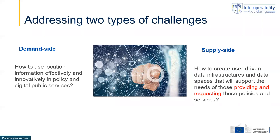Summarizing this, we see that there are in fact two main types of challenges. On one hand, there are challenges with regard to the demand side — how can we make sure that location information is and can be effectively and innovatively used in public policies and digital public services. But there's also the supply side, because even though existing infrastructures and data spaces are already making a lot of data available, it's about how we can make sure they really provide data in such a way that they support policies and services.